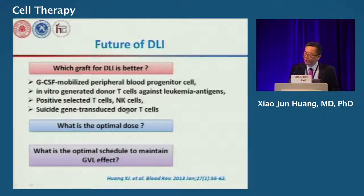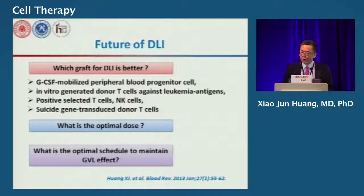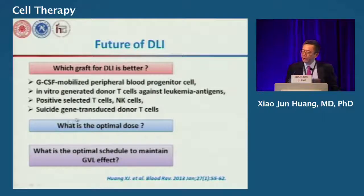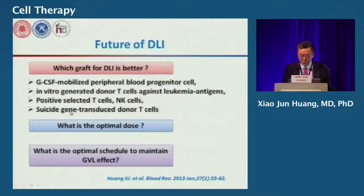Regarding NK cells, despite many publications, we lack solid clinical data convincing us that NK cells are really effective, especially in leukemia. Suicide gene-transduced donor T-cells have also been applied — this idea has been published for more than 10 years — but convincing clinical data demonstrating that this strategy works is still lacking.